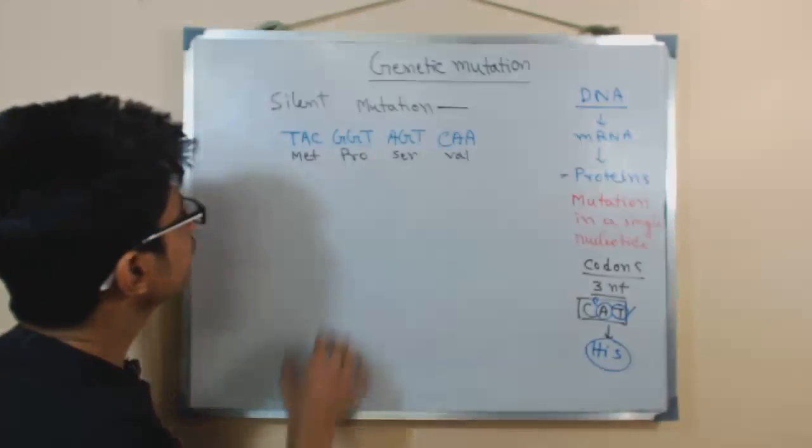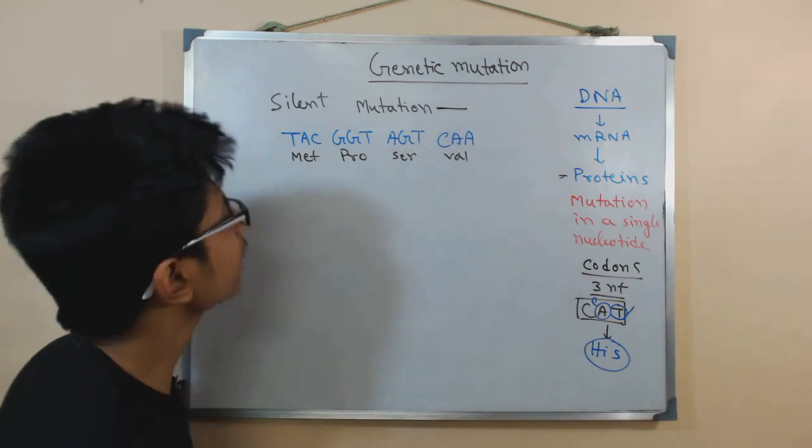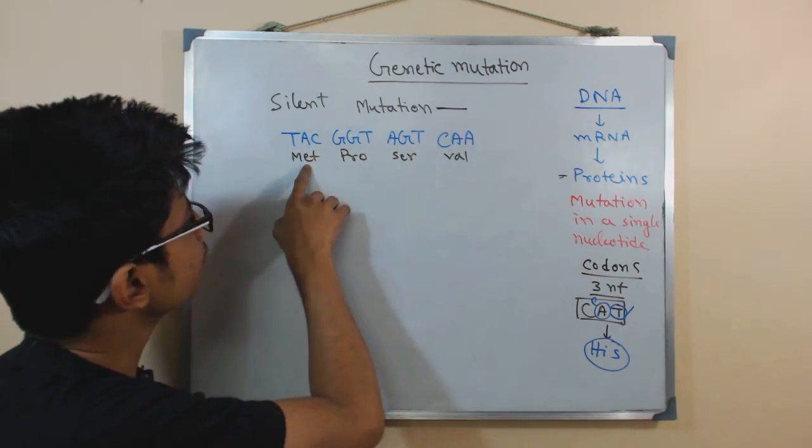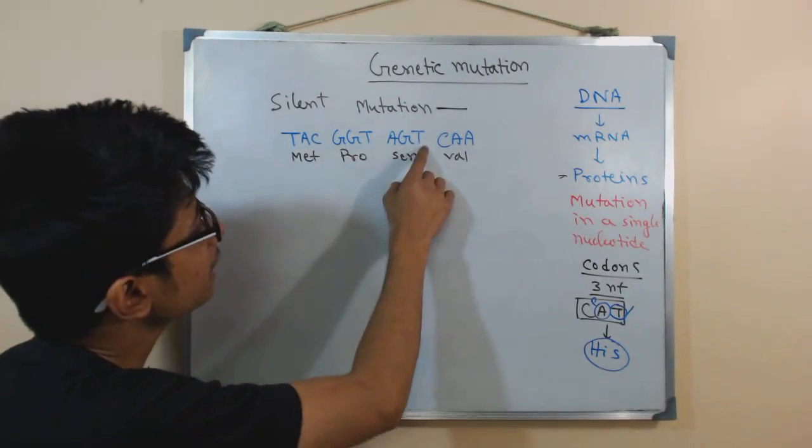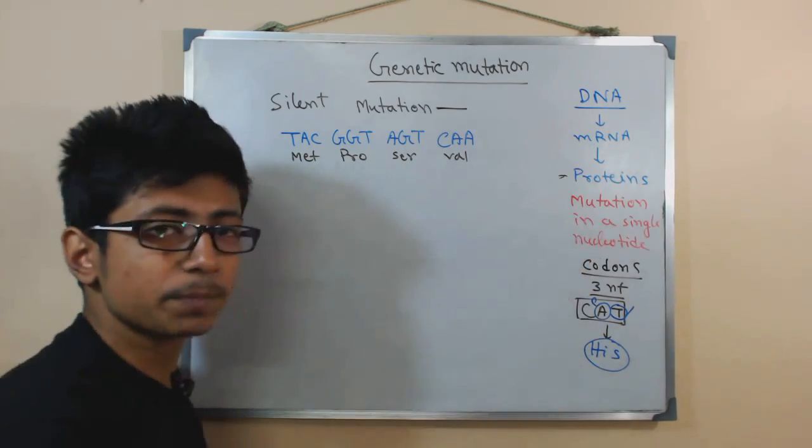Let us see the example. Here we have a stretch of different codons like TAC, GGTA, AGTA, and CAA. This stands for different types of amino acids. For example, TAC produces methionine, GGTA adds proline, AGTA adds serine, and CAA adds valine during the protein synthesis pathway.